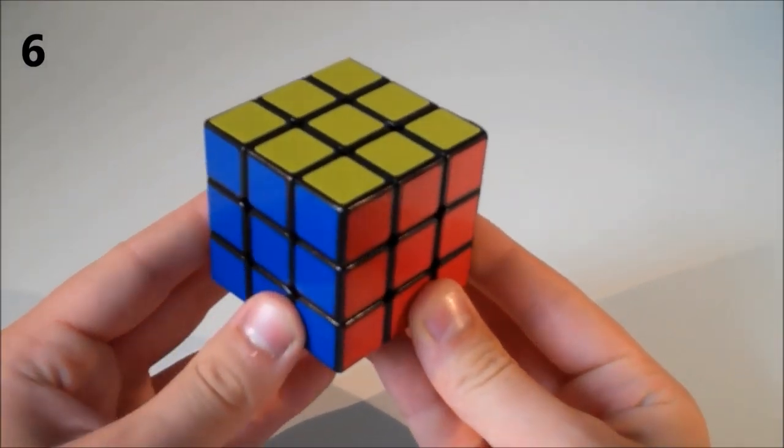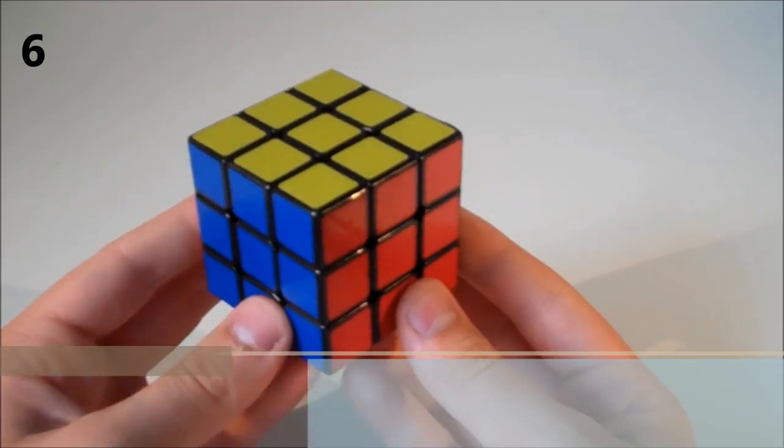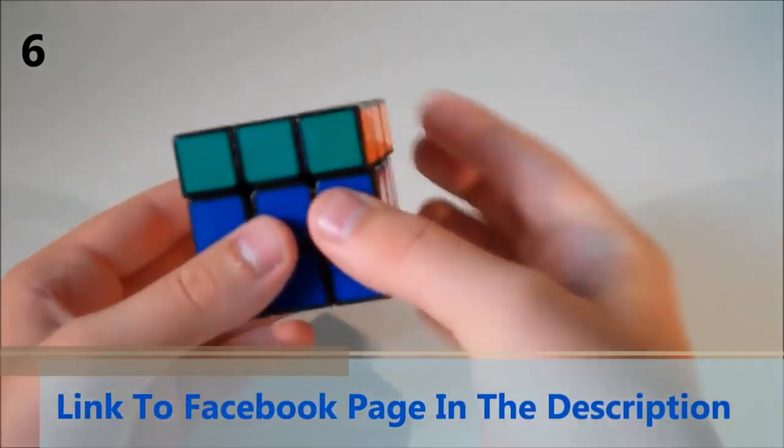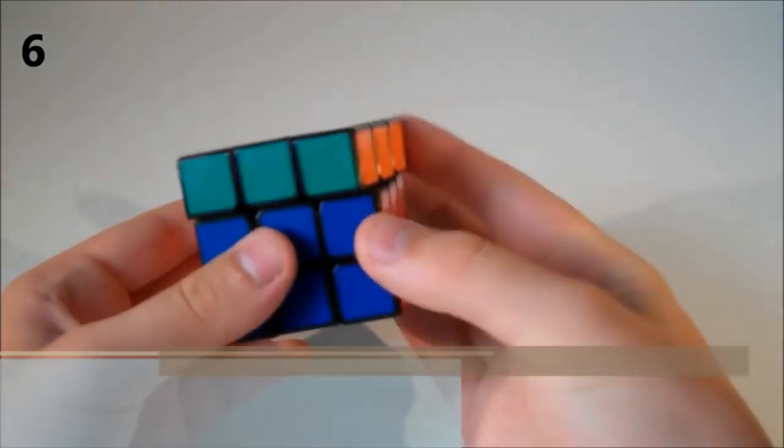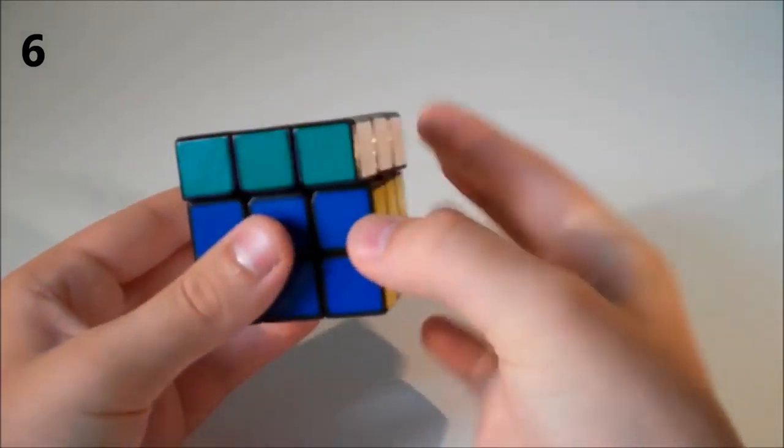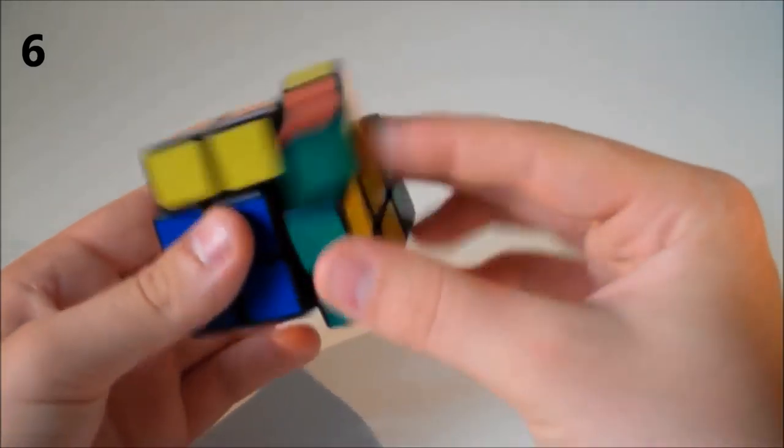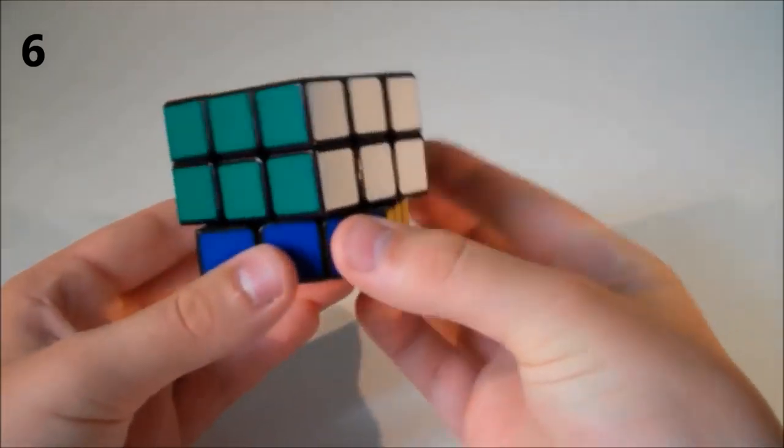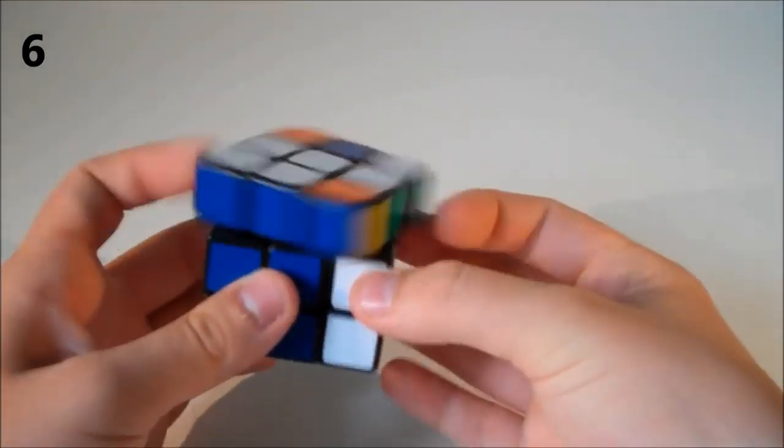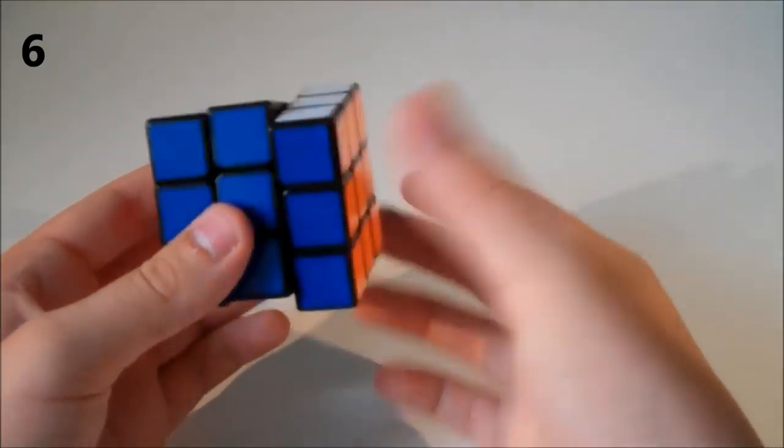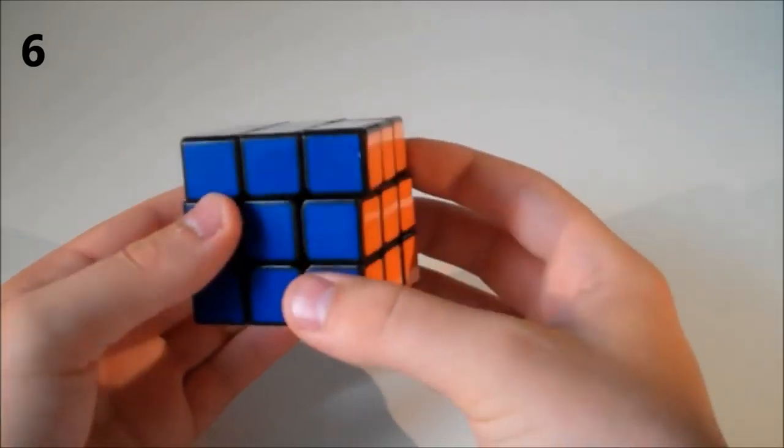So at number 6 we have the Diane Guhong version 2. Now this is my main 3x3 at the moment. 3x3 is the cube that I practice the most. This cube is really smooth and I really enjoy solving 3x3 on this puzzle. It makes it really easy to solve the puzzle and I really like the smooth feeling of it.